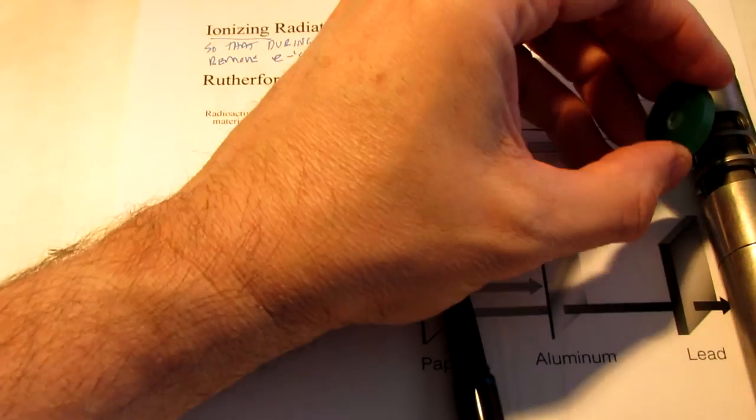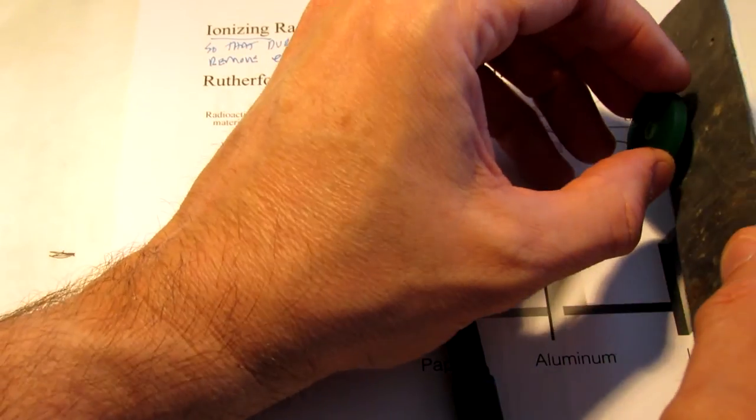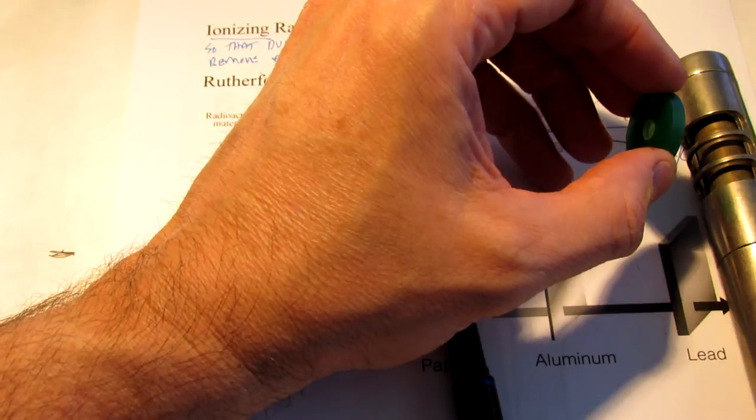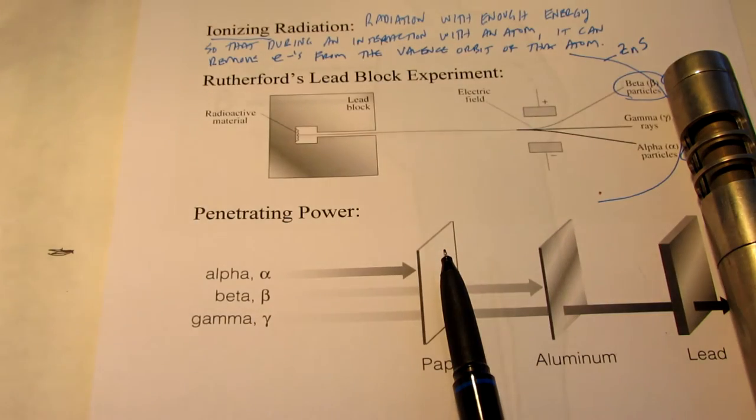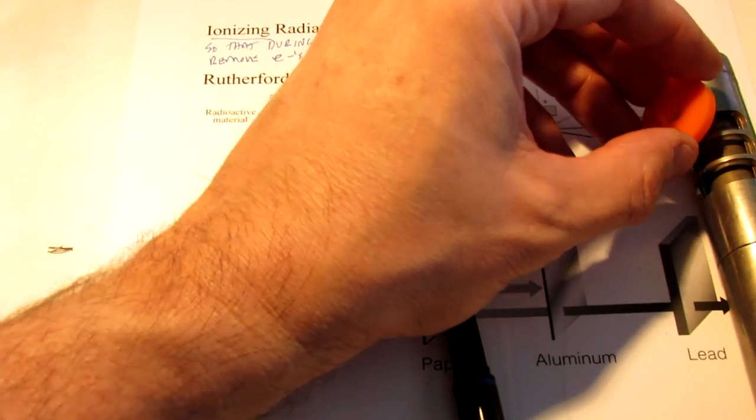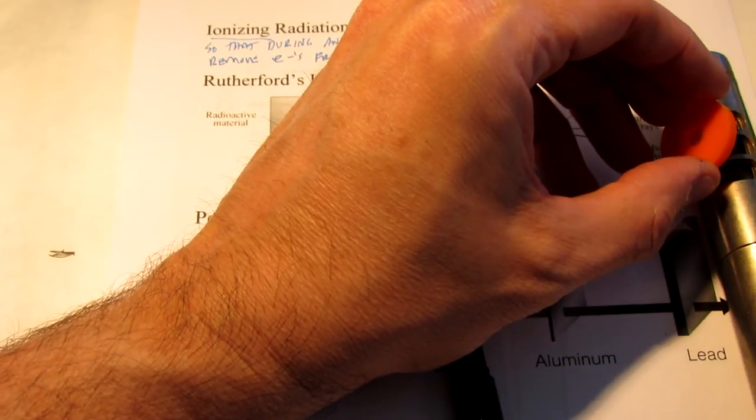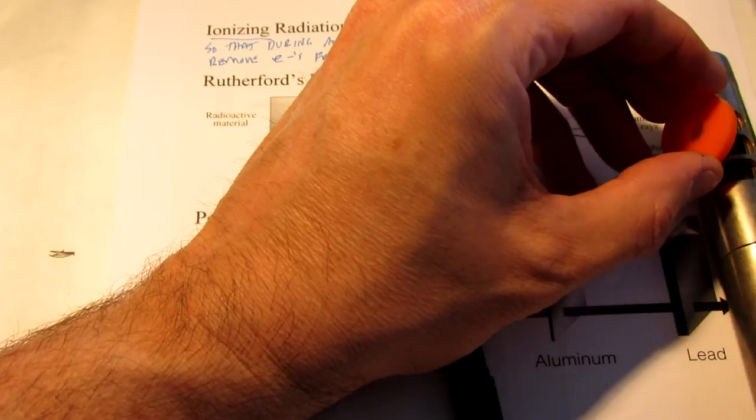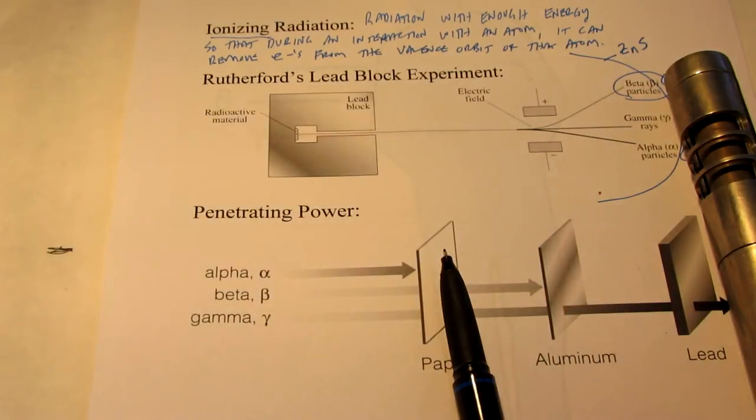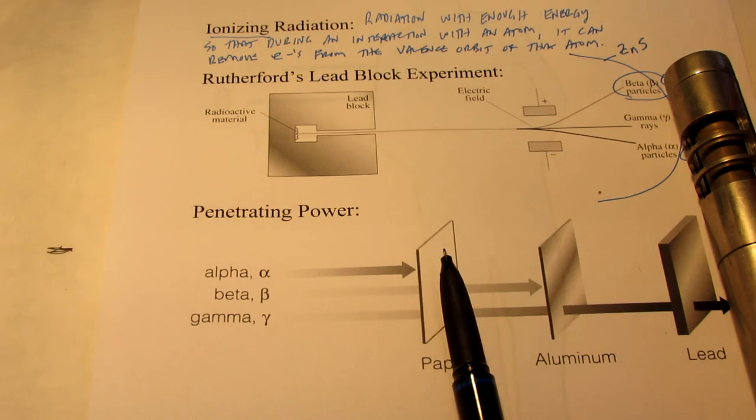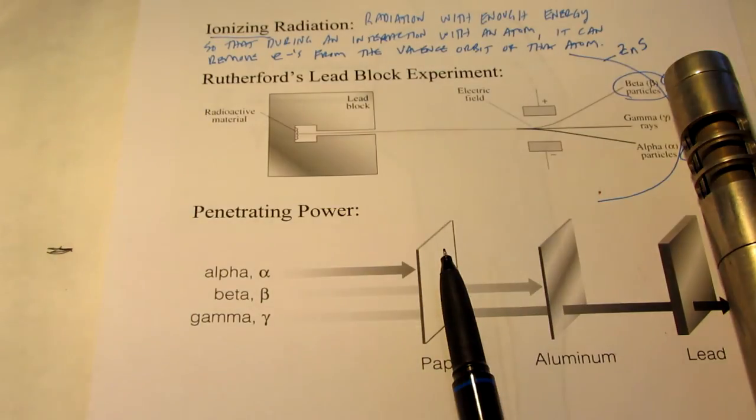So the penetrating ability of gamma is much better than that of beta. So let's do that again. Here's my beta source. And then we'll do that again with gamma, and here's my gamma. So with the gamma, it really didn't make a difference if the lead shielding was there. The gamma has the best penetrating ability of all.